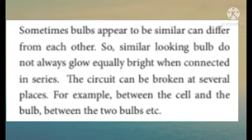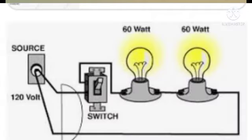The circuit can be broken at several places — for example, between the cell and the bulb, or between the two bulbs. When one bulb is bright, the other may be dull. The brightness and dullness of bulbs can vary in a series circuit, and the circuit can be broken.